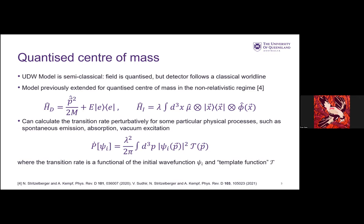What one can do is then one can look at the transition rate perturbatively, using perturbation theory like usual, and consider some particular physical processes such as spontaneous emission, absorption, or vacuum excitation. If you do that, you find a transition rate which is a functional of your initial wave function for your detector, and you have this template function, which is some function which characterizes all the dynamics of your system.